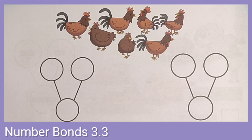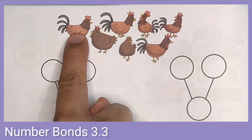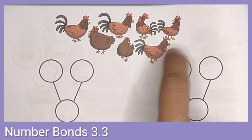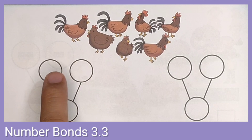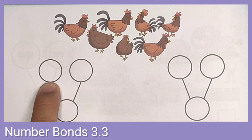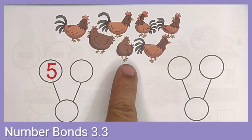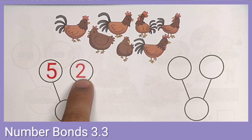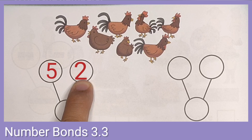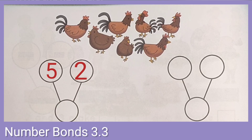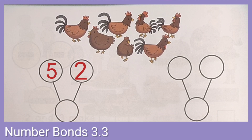Let's try to count how many roosters there are. How many hens do we have? One, two, three, four, five. Let's put that in here — five. How many roosters do we have? One, two. Let's put that on the second circle. Five and two make — let's count them all.